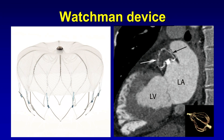This is a photo of the Watchman device, a left atrial appendage occluder device used to help prevent cardioembolic strokes in patients with atrial fibrillation who cannot receive anticoagulation. In patients with atrial fibrillation, one of the feared complications is thrombus forming within the left atrial appendage. To prevent thrombus from causing a stroke, interventional cardiology places the device into the appendage.